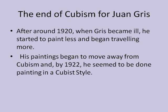After around 1920, when Gris became ill, he started to paint less and began traveling more. His paintings began to move away from Cubism, and by 1922 he seemed to be done painting in a Cubist style. Although in 1925, Gris had his first exhibition, and the only one in his lifetime outside of France.